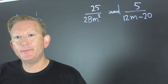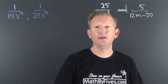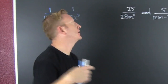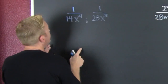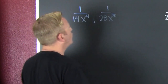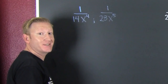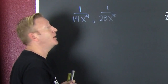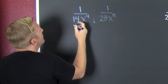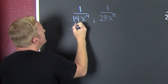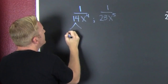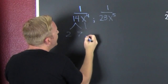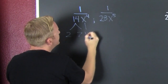We're finding the least common denominator in these rational expressions. We're going to do it just like finding the least common denominator with numbers, so we're going to separate these — that's a two and a seven, and then that's an X to the four.